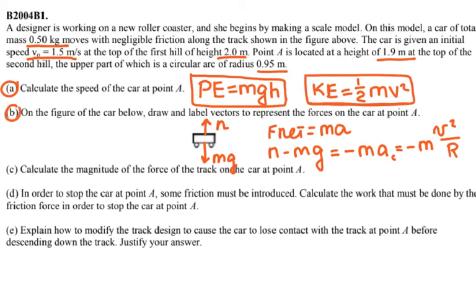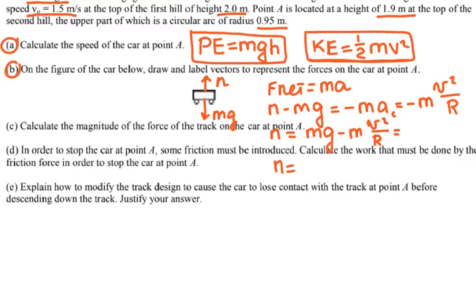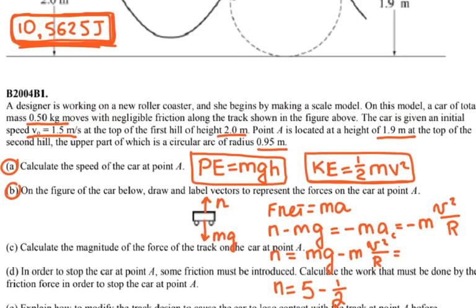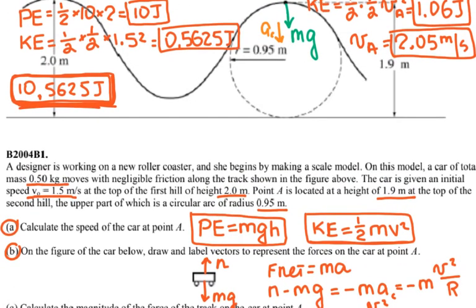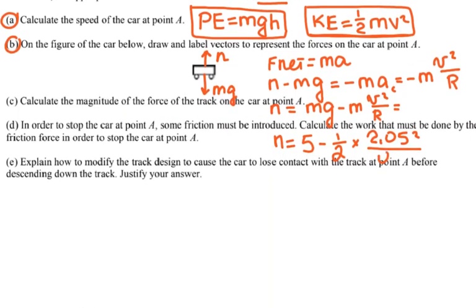I have negative ma_c, which is negative mv squared over R. If I solve for the normal force, I have mg minus mv squared over R. Plugging in my numbers: mg is 5, mass is 0.5 and g is 10, minus one-half times the velocity I just found at point A, 2.05 squared, divided by the radius 0.95. So the normal force equals 2.71 N.